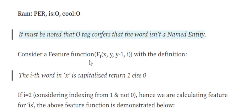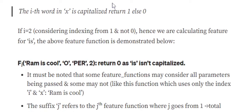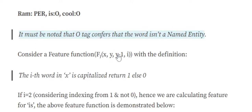Each feature function has the signature f(x, y, y_minus_1, i). Here x refers to the particular sentence — 'Ram is cool'. y refers to the tag of the current word. i is the index of the word. For example, if i equals 2, that is the second word 'is' (counting from 1). So if we are calculating a feature function for the word 'is', the index i would be 2.